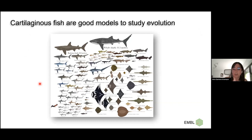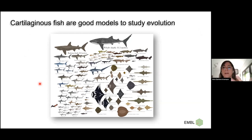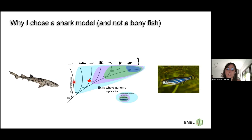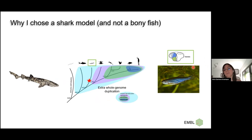Cartilaginous fish — sharks, skates, and chimeras — have been living in the oceans for over 400 million years, even before the first trees appeared on land. Their life cycles are very long and slow, which argues for slow evolution. This means they may have retained ancient features of the common ancestor that other vertebrate lineages might have secondarily lost. Also, sharks did not undergo an extra whole-genome duplication as bony fish did, meaning orthology is one-to-one when comparing sharks and mammals.